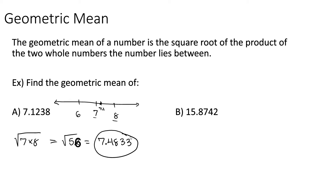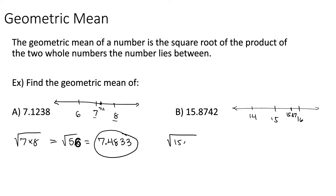If we wanted to find the geometric mean of 15.8742, we would need to find the two numbers that 15.87 falls between. If we draw out a number line, we would see 15.87 falls somewhere between 15 and 16. So the geometric mean would be the square root of 15 times 16, or the square root of 240, which ends up being 15.4919.